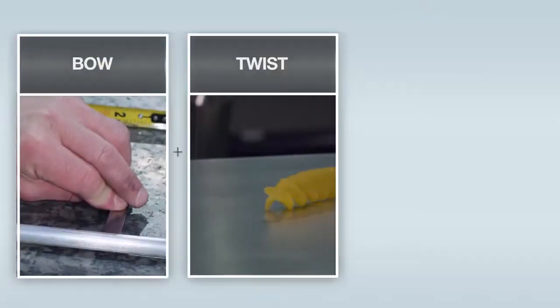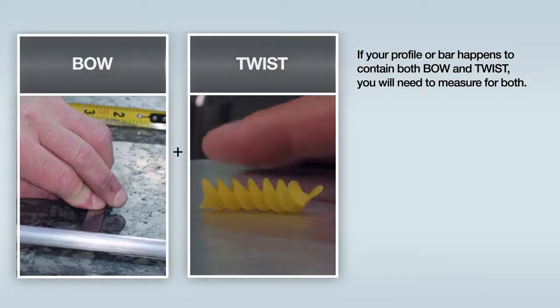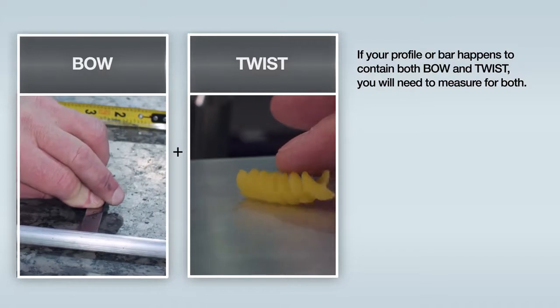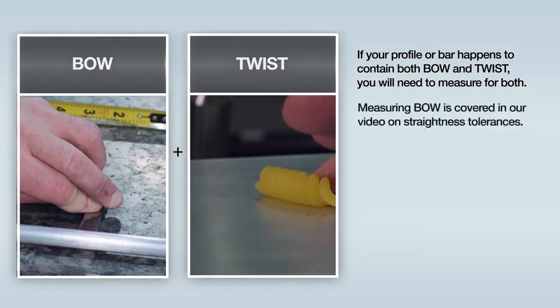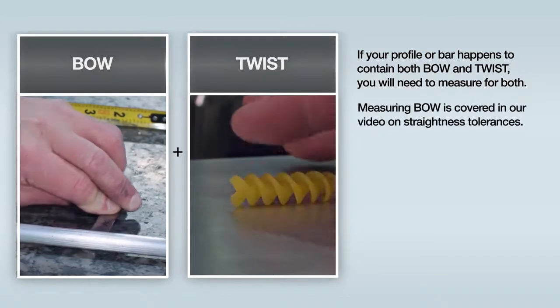Separately, if your profile or bar happens to contain bow and twist, you will need to measure for both. Measuring bow is covered in our video on straightness tolerances.